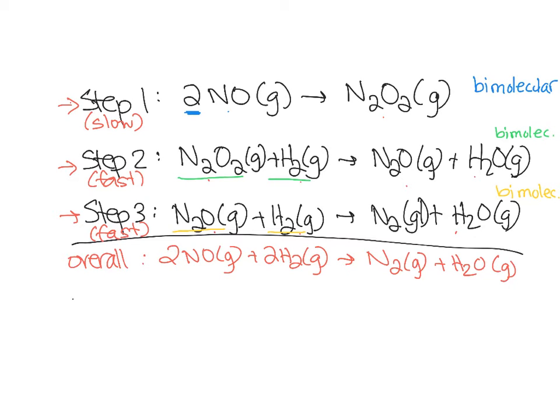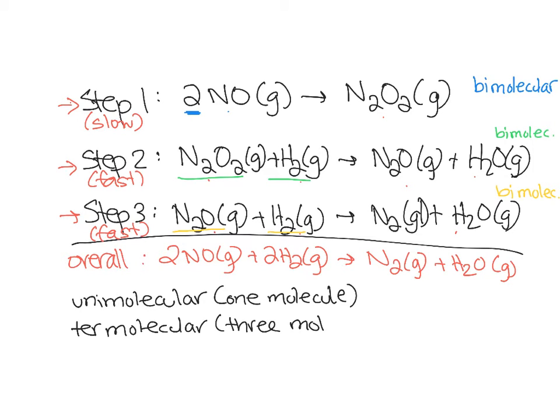Every once in a while, you'll get what's called a unimolecular step. Not in this reaction, but somewhere else. That's one molecule involved. Every once in a great while, you'll get what's called a termolecular step - three particles, three molecules involved. And all that this is, is it's counting up the number of molecules that are reactants in a step. If there's two molecules involved in a step, it's bimolecular. If there's three molecules involved in a step, it's termolecular. So molecularity is helpful to us.